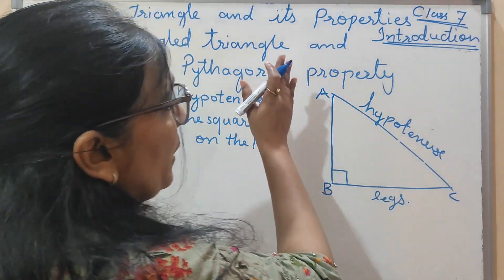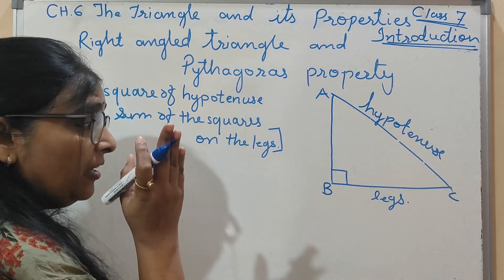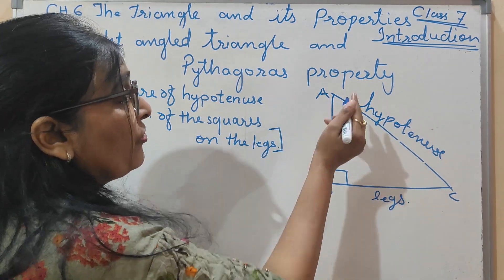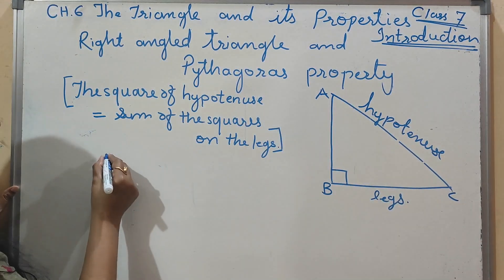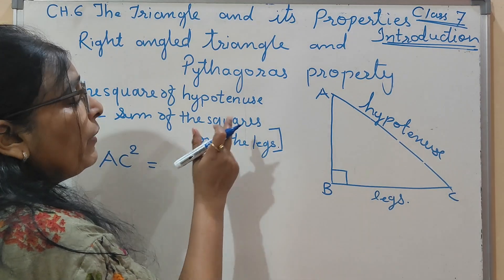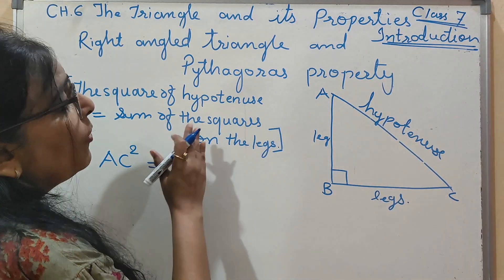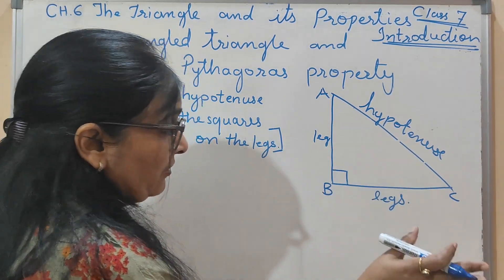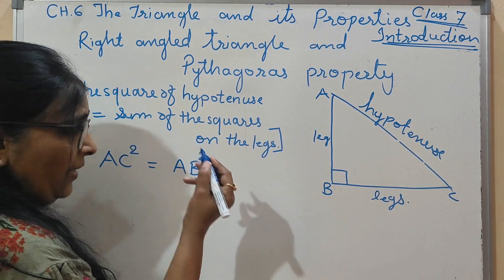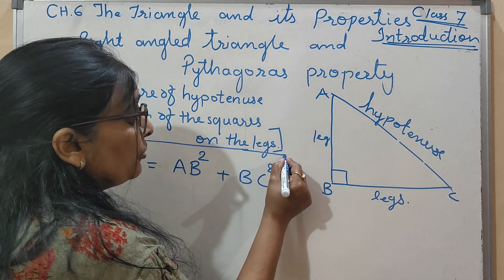So this theorem — the Pythagoras theorem — states that in a right angle triangle, the square of the hypotenuse is equal to the sum of the squares on the legs, meaning the remaining two sides. So AC square equals AB square plus BC square. This is called the Pythagoras property, also known as the Pythagoras theorem.